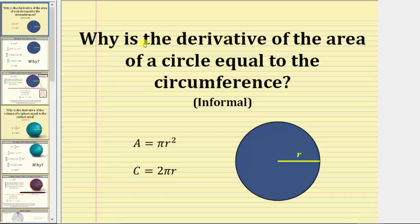In this video, we will answer the question: why is the derivative of the area of a circle equal to the circumference of a circle, where the area equals pi r squared and the circumference equals two pi r?